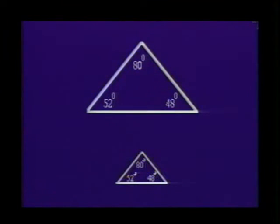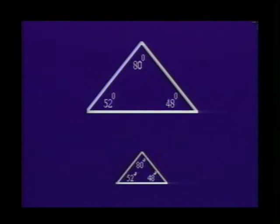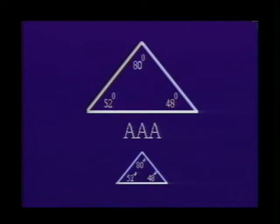We are going to pay particular attention to similar triangles. Triangles are similar if and only if there is a correspondence between the angles of two triangles and each set of corresponding angles is congruent — angle, angle, angle. This is abbreviated AAA.